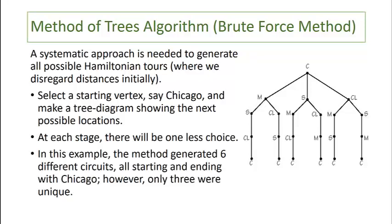In this example the method generated six different circuits, all starting and ending with Chicago, and we saw that each route was actually listed twice because we got the same distance going forward or backward. So while there were six different circuits, only three of them were actually unique.